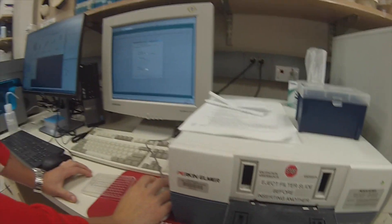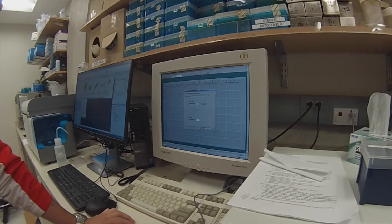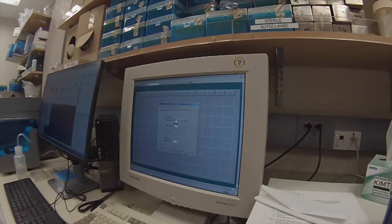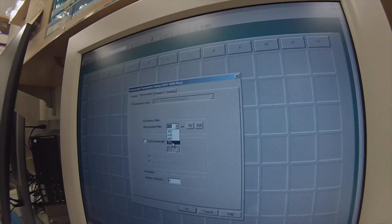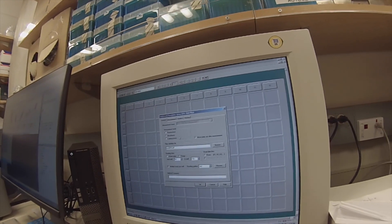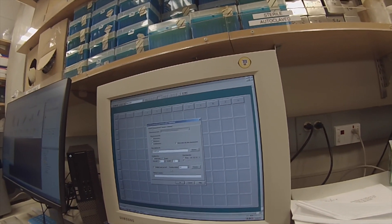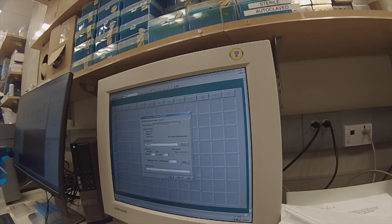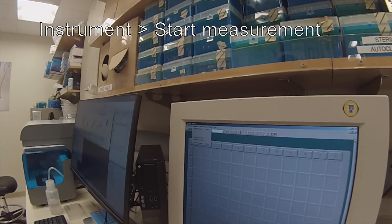Then we're going to be able to choose our filter here at the software. We'll just put 590. We will double check that we have the settings that we want, and then finally we're going to go back to Instrument, then Start Measurement.